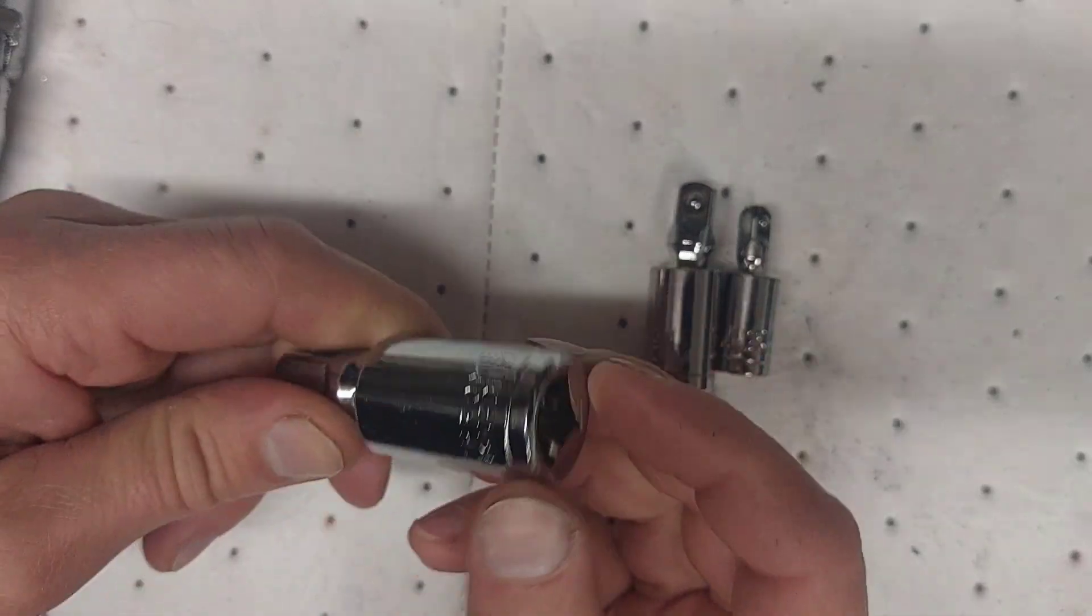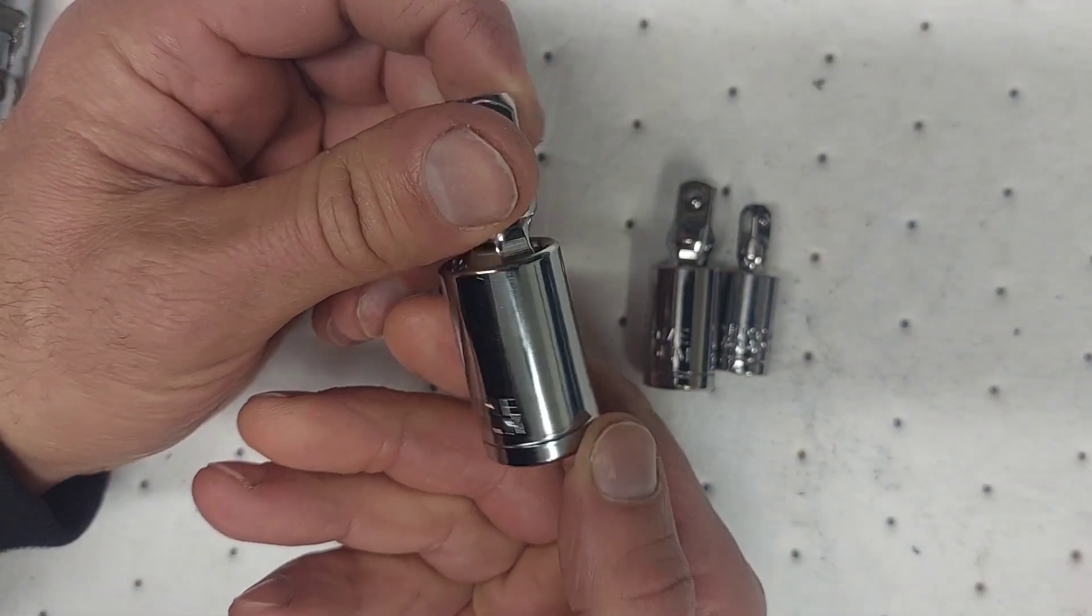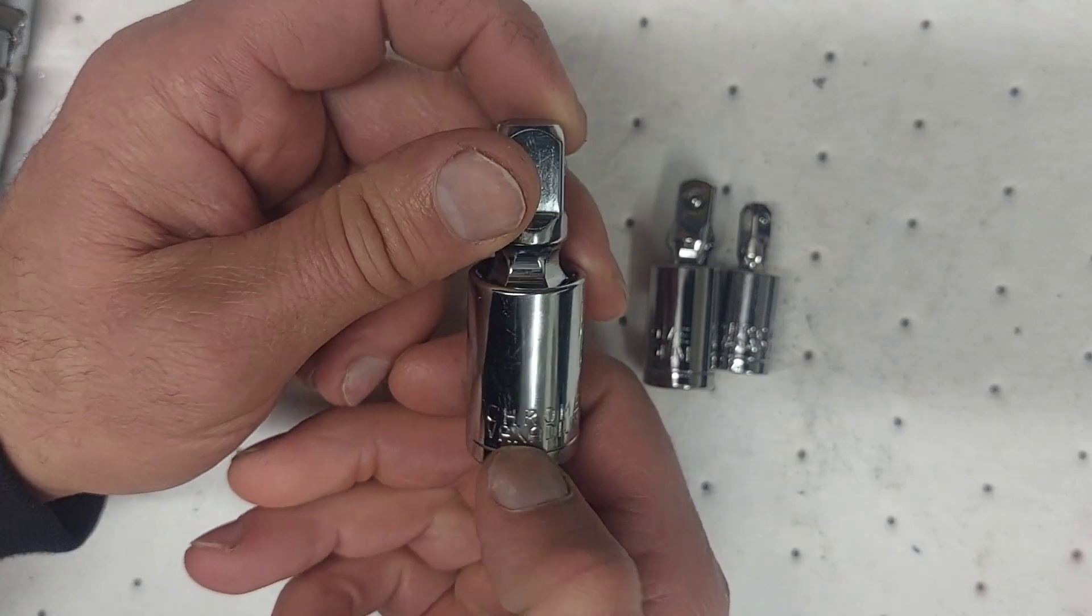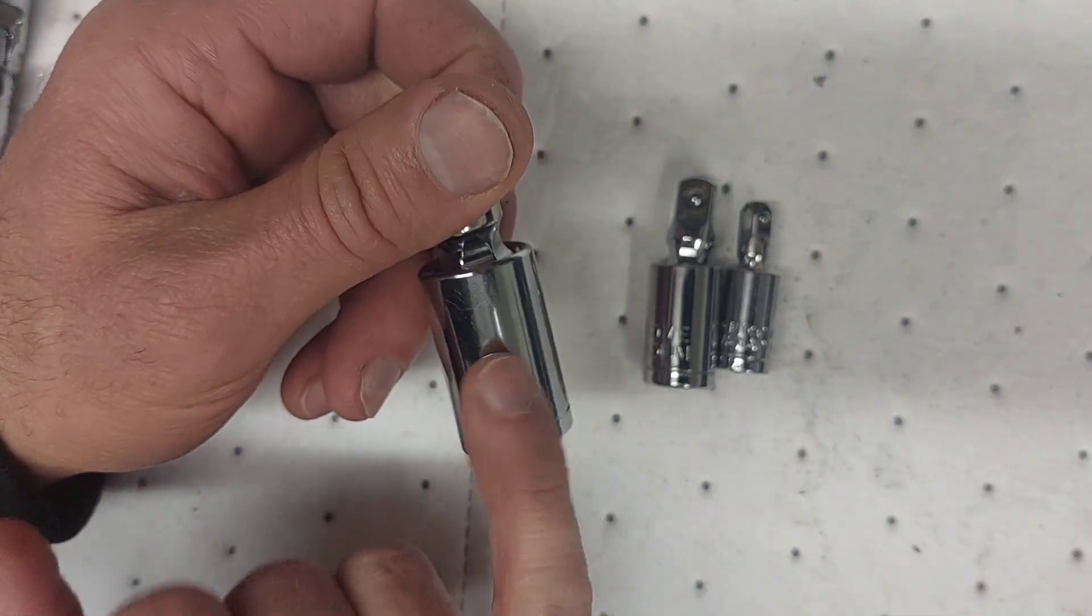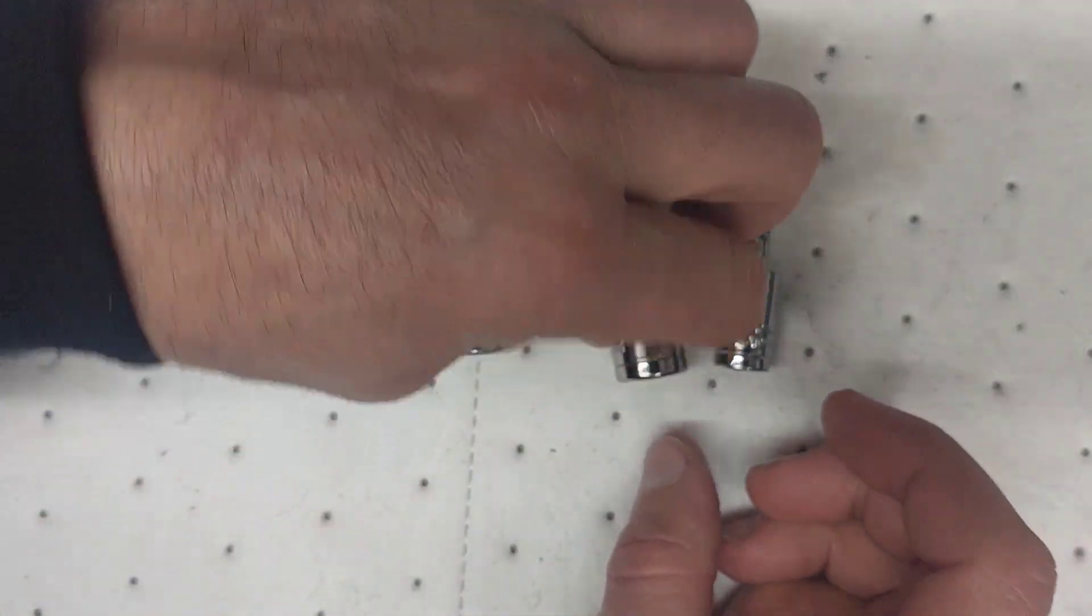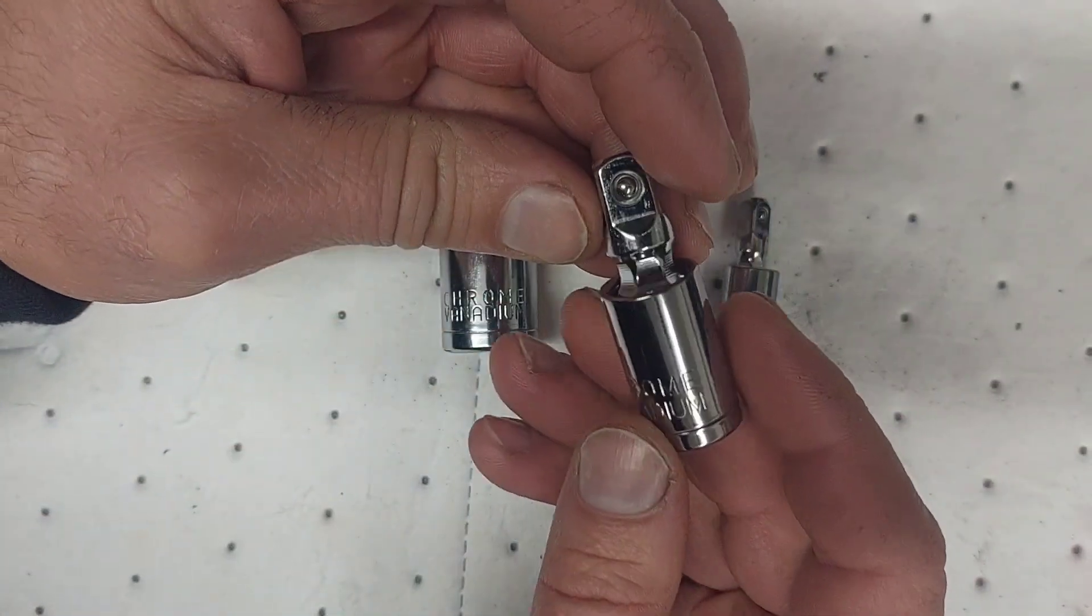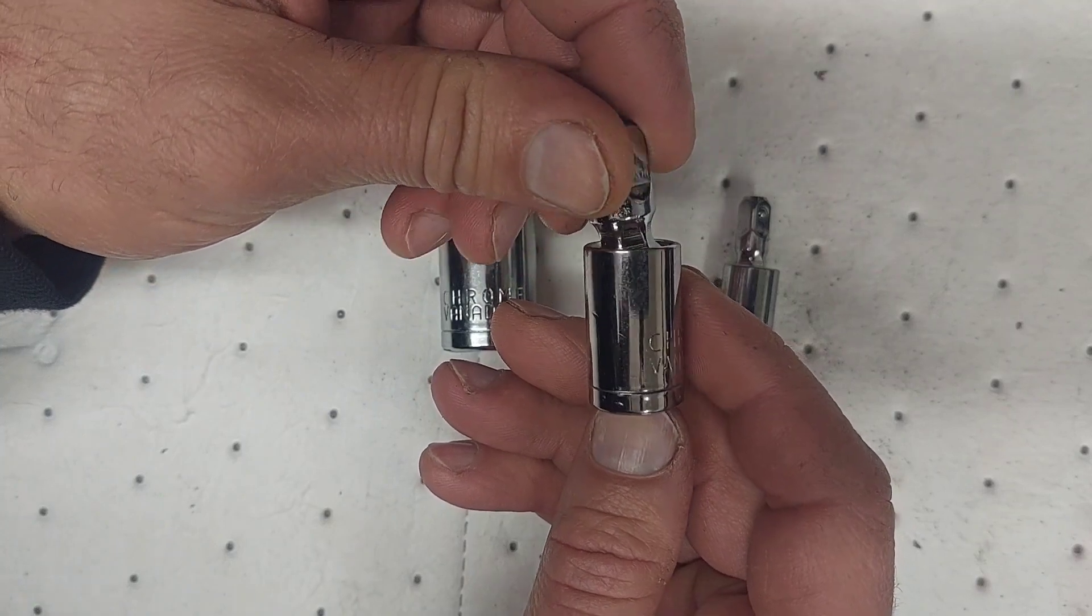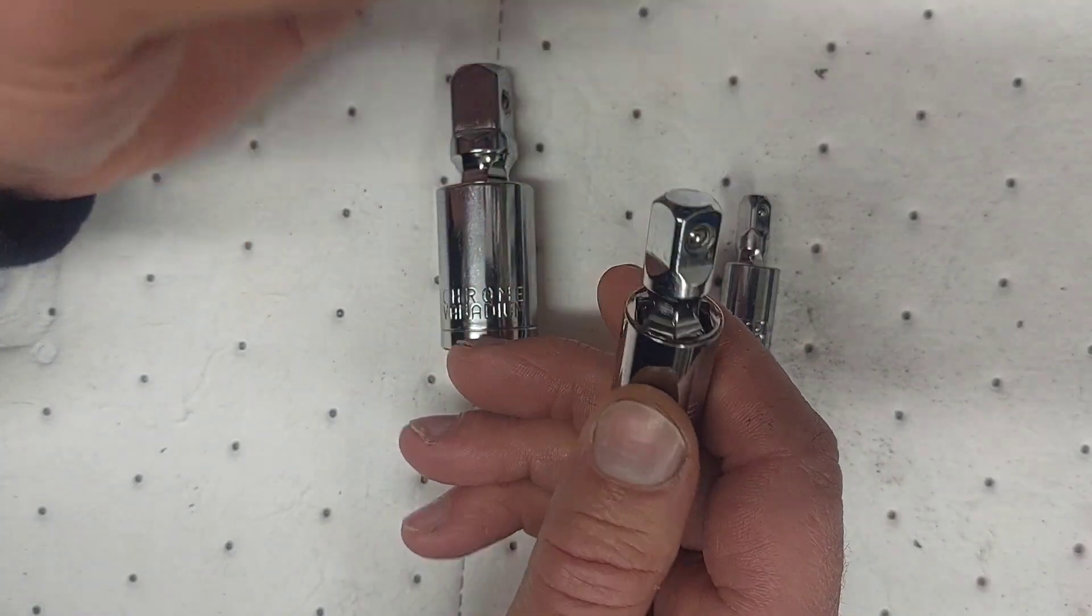The labeling on the inside—on the sides of them there is no sizes labeled on here, it just has chrome vanadium written on it.